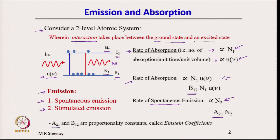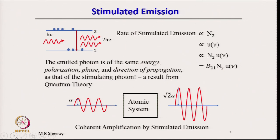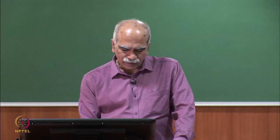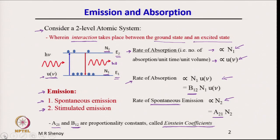The constants A21 and B12, B21 are the proportionality constants called Einstein coefficients — Einstein introduced these and therefore they are called Einstein coefficients.